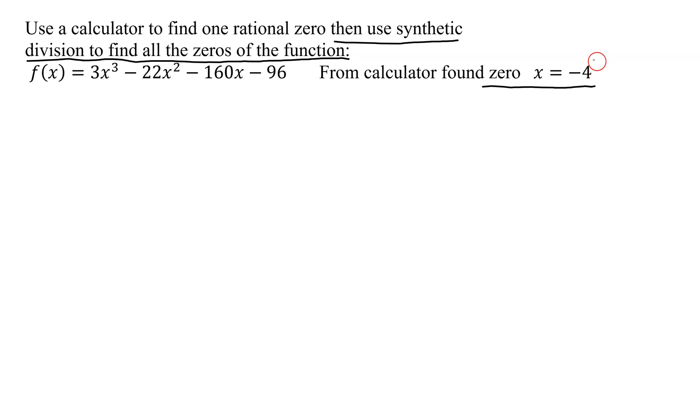So with synthetic division, you take your zero, and your zero is the number that goes in the box. And now I need to write the coefficients here of my function. Check, are there any missing terms? I have an x cubed, x squared, x, and a constant. No missing terms. So stripping off my coefficients, I'm going to get 3, negative 22, negative 160, and finally, negative 96. Leave a little bit of room. Draw your line.